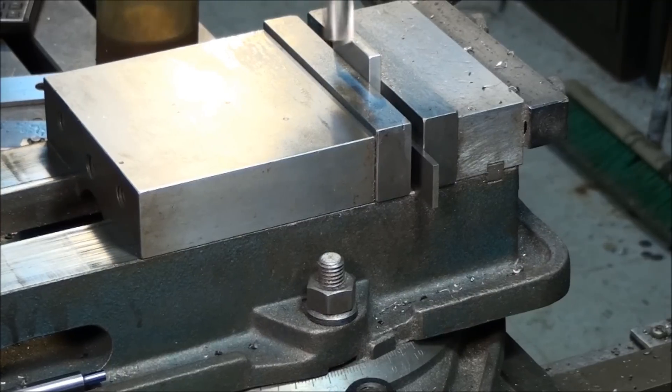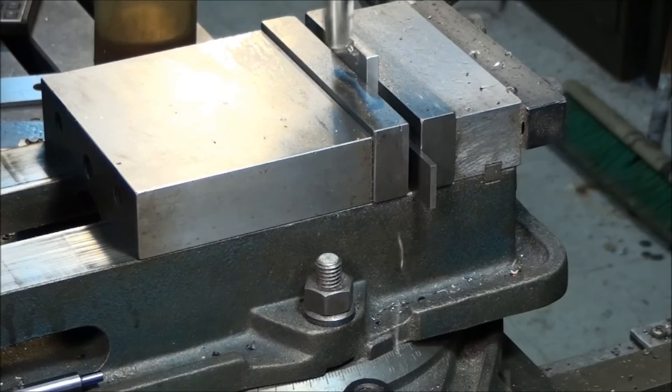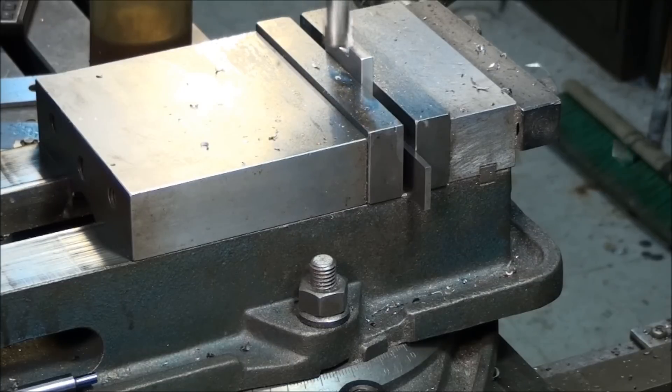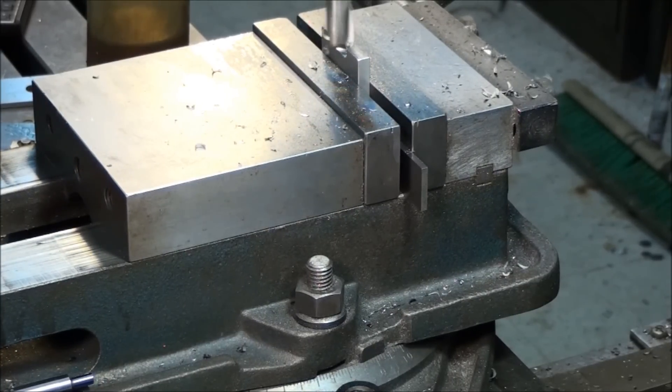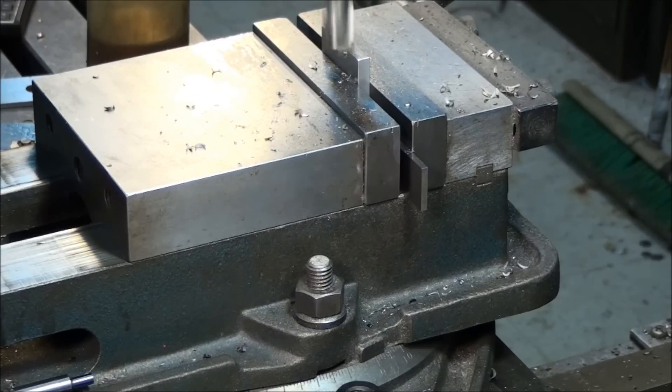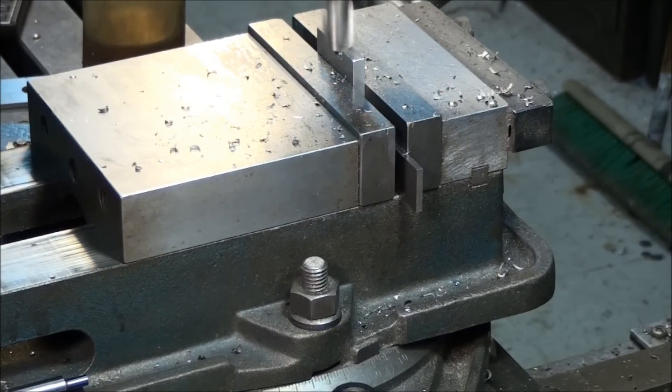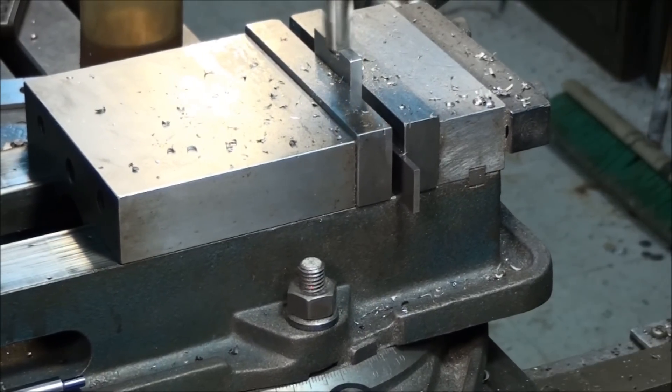All right, so let's rough it out. I'm going to plunge mill it just like I did on the body because this is the easiest way to use an end mill. It's the least amount of wear on an end mill. You can rough out that plunge mill so you can finish up side mill. Save your end mill for the finished side mill cuts.